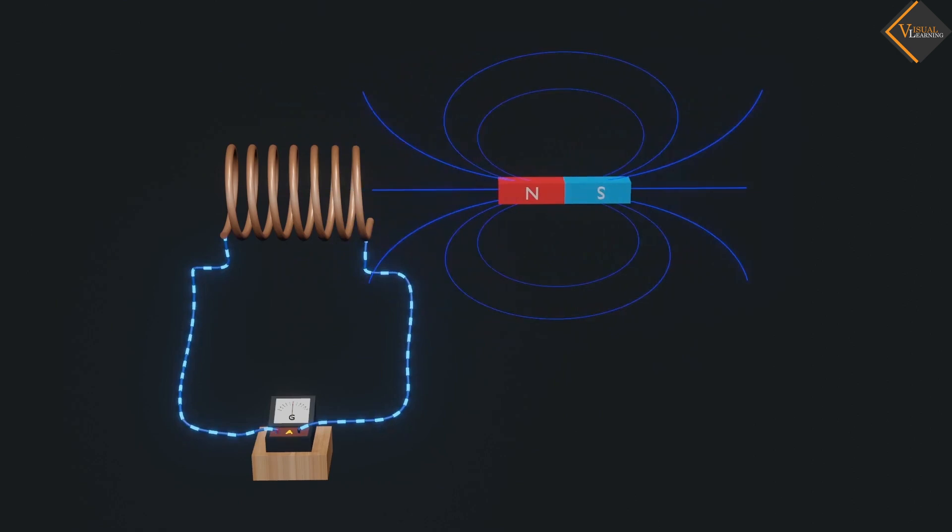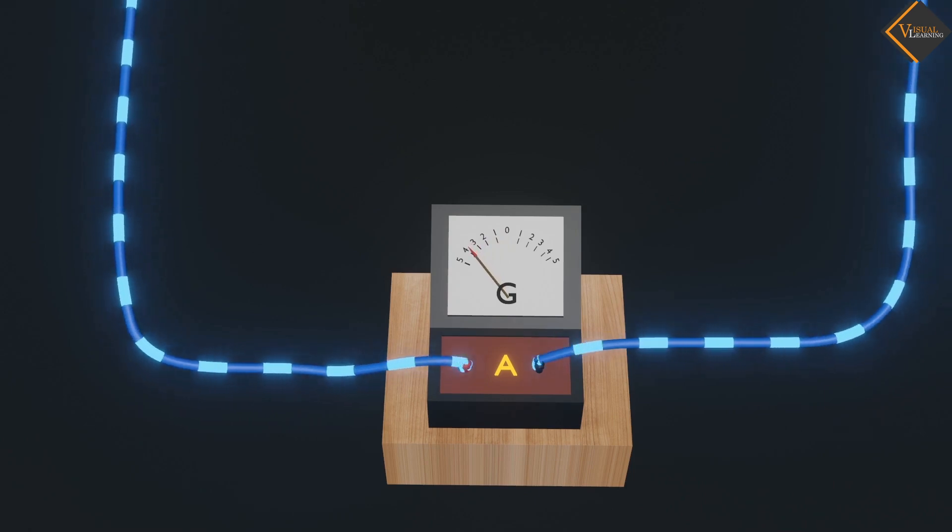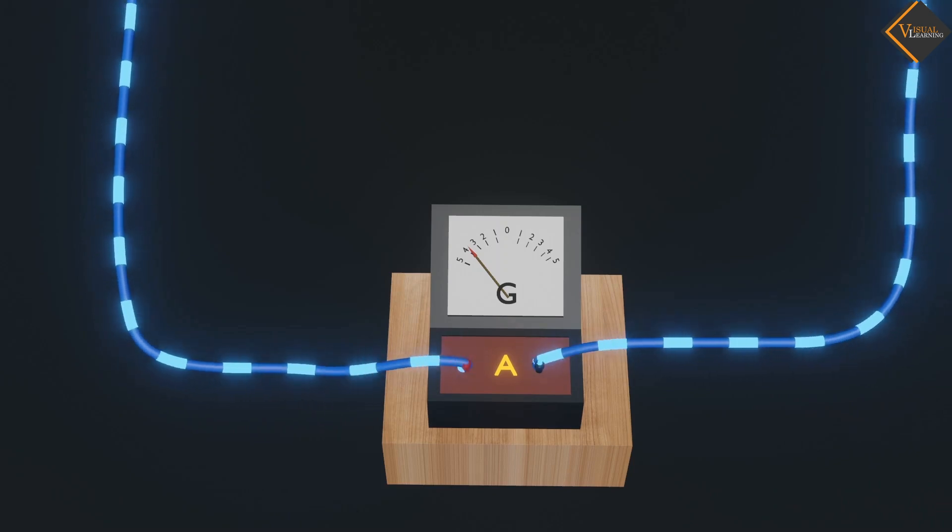Move the bar magnet away from the coil. Again, we notice that the galvanometer is deflected towards the left, showing that the current is now set up in the direction opposite to the first.